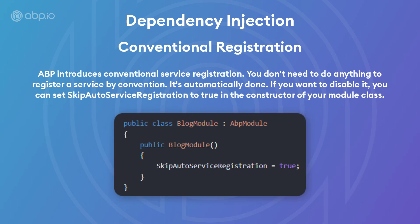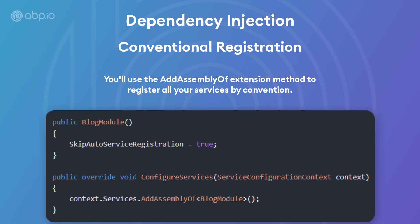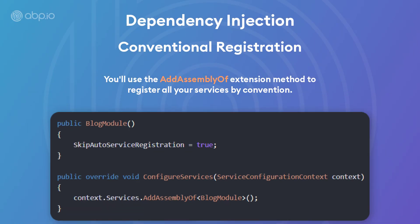ABP also introduces conventional service registration. You don't need to do anything to register a service by convention — it's automatically done. And if you want to disable it, you can set the skip auto service registration to true in the constructor of your module class. Once you turn off auto registration, you should manually register your services using the addAssembly extension method to register all your services by convention.